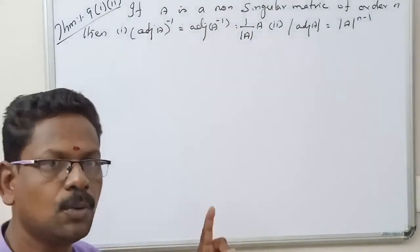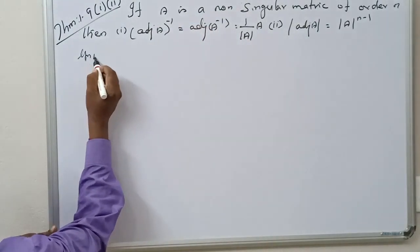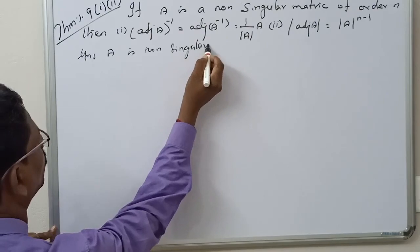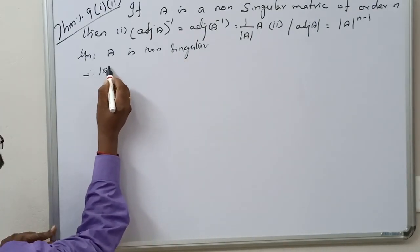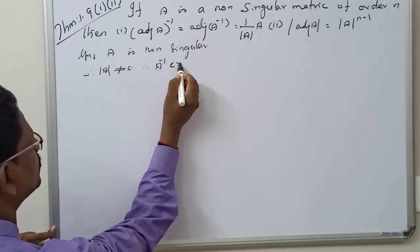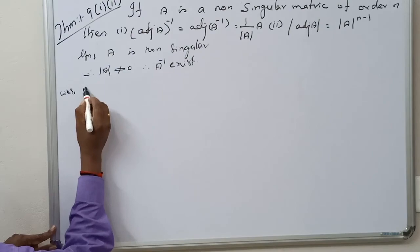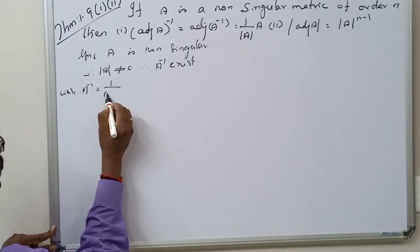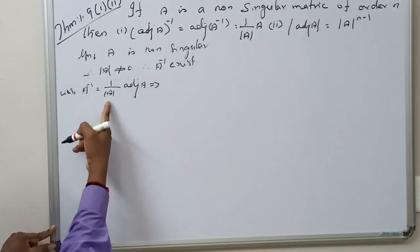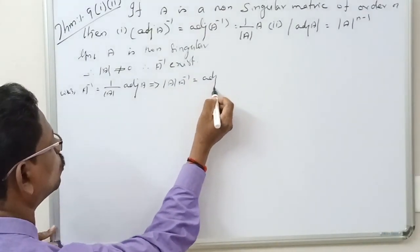For the first part, given A is not singular, therefore determinant of A is not equal to 0, therefore A inverse exists. We know the formula: A inverse equals 1 by determinant of A into adjoint of A.